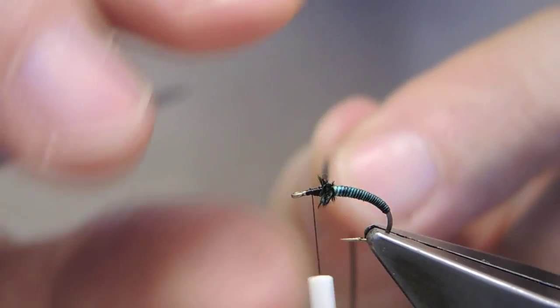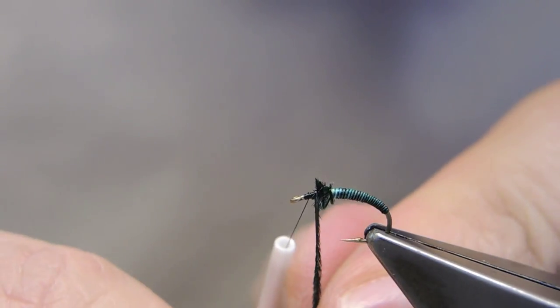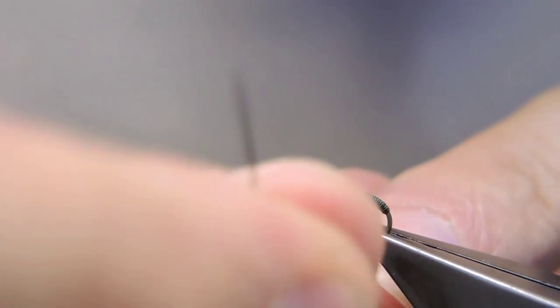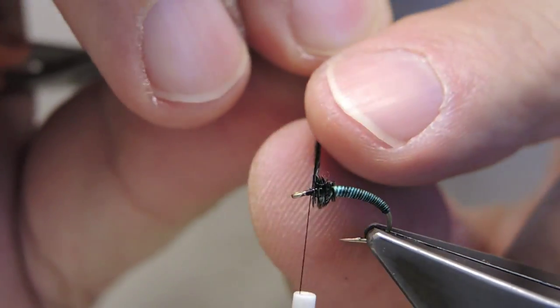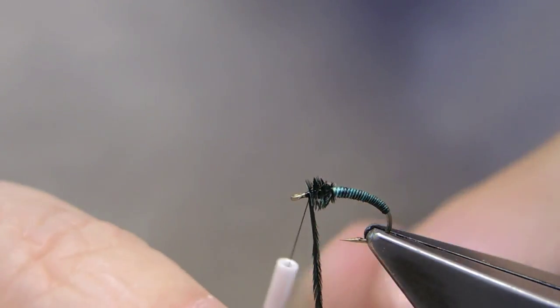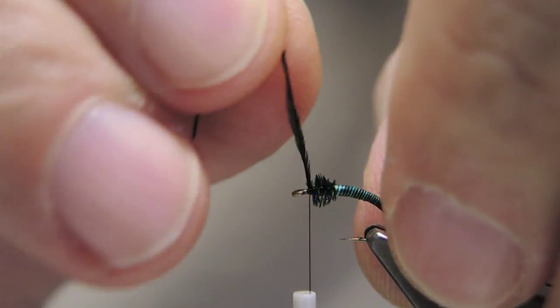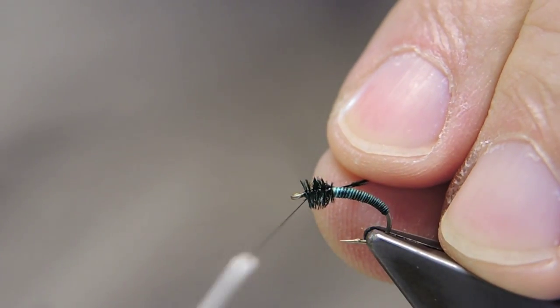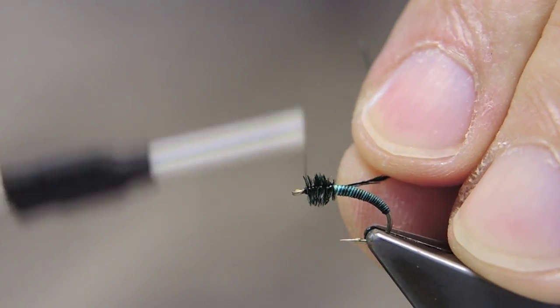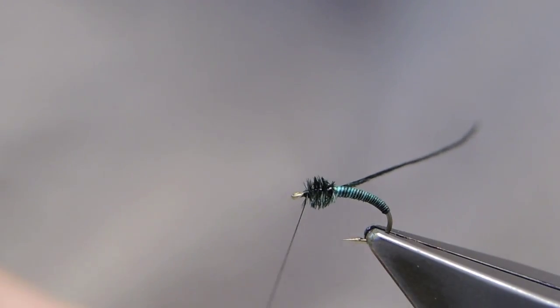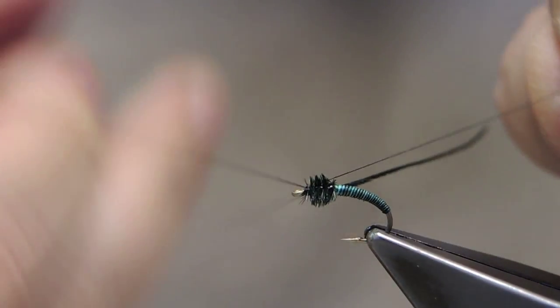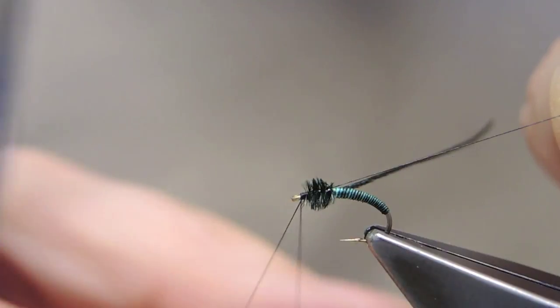Then wrap touching turns of the ostrich herl, and finish off with a three turn whip finish.